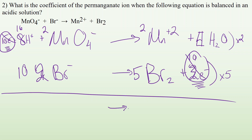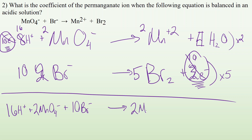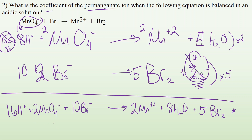Bringing everything down: 16H⁺ + 2MnO₄⁻ + 10Br⁻ → 2Mn²⁺ + 8H₂O + 5Br₂. This is the balanced redox reaction. The question asks for the coefficient of the permanganate ion — that coefficient is two.